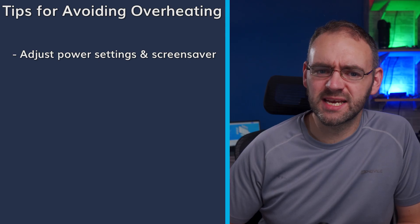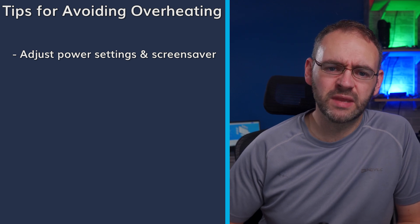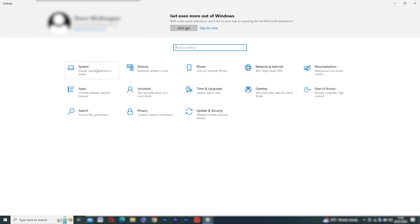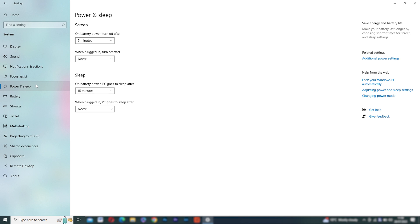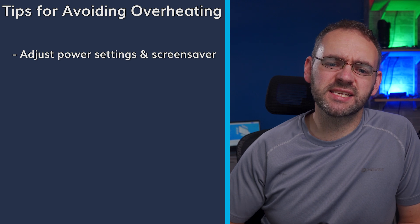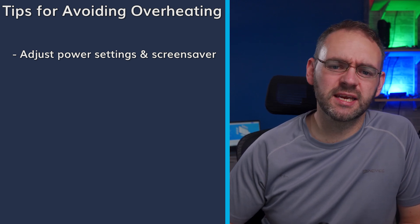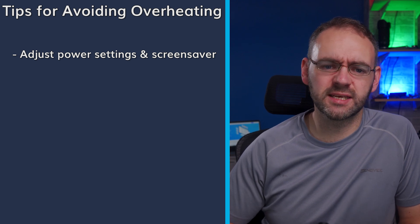Optimizing your computer's power settings can help prevent unnecessary heat generation. Access the Power Settings by clicking on the Start menu, selecting Settings, then choosing System and navigating to Power and Sleep. From there you can adjust the power settings to balance performance and energy efficiency. Additionally, consider disabling or modifying screensaver settings, as certain screensavers can consume system resources and contribute to overheating.